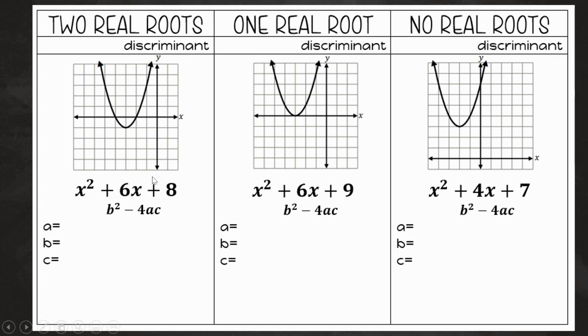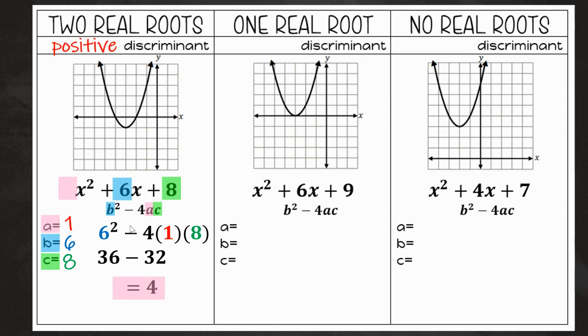In this first example here, we have x squared plus 6x plus 8. The first thing we're going to do is identify our a, b, and c terms. So our a, if it's not listed, is just going to be one. Our b here is 6, and our c is 8. We're going to plug in 1, 6, and 8 into the formula b squared minus 4ac and simplify. So we're going to have 6 squared, which is 36, and then negative 4 times 1, which is negative 4, and negative 4 times 8 is negative 32. So 36 minus 32 gives me a positive 4. That is a positive discriminant, which means I have two real roots. What I've done is I've actually given you a visual, a graph of this function, so that you can see that it does cross the x-axis in two points.